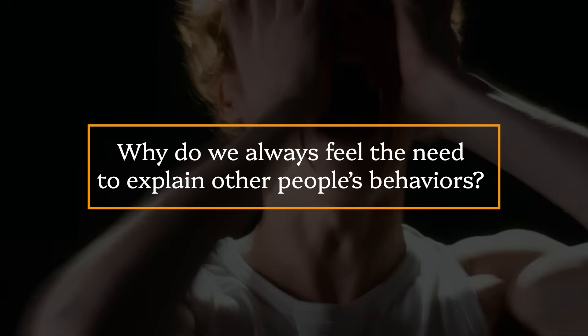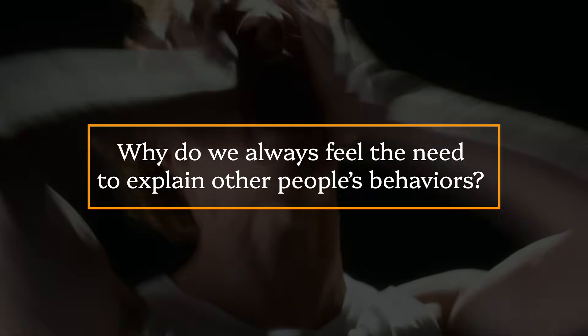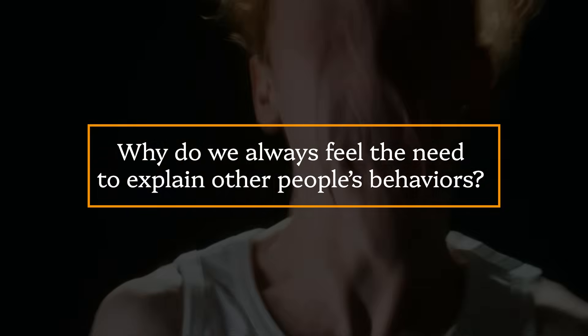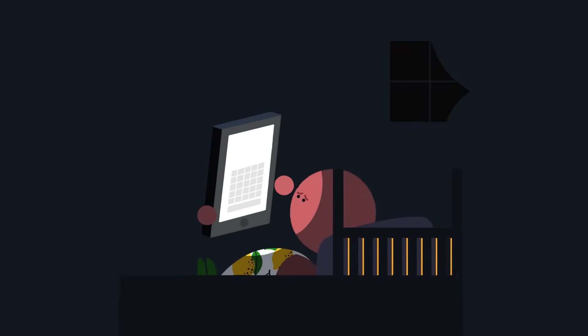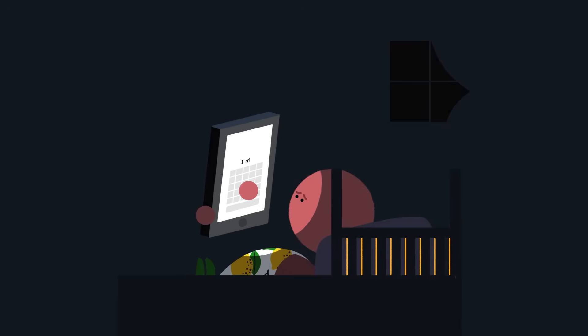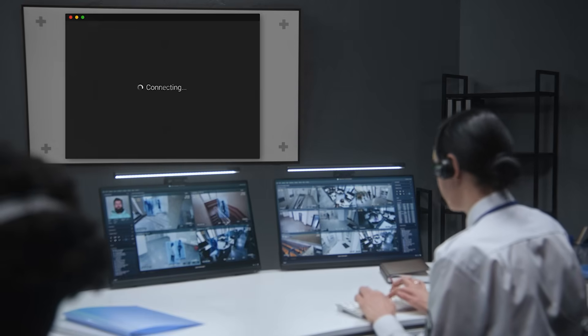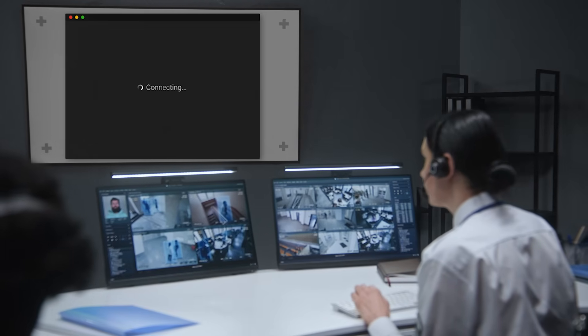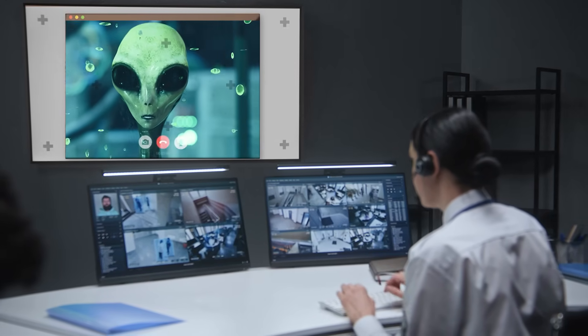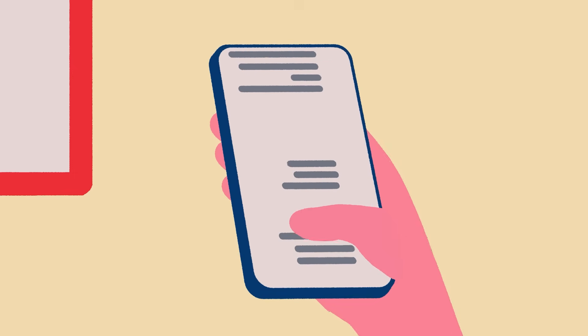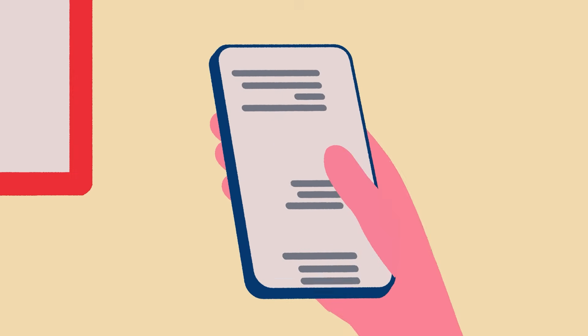Now let's start our review off with a question. Why do we always feel the need to explain other people's behaviors? For example, we all have that one friend — trying to get a hold of them is like texting a black hole. NASA would have a better time contacting aliens than you getting a reply from that friend. Like, seriously, what are they doing? Why are they ghosting you? Are they busy or are they just a terrible friend?